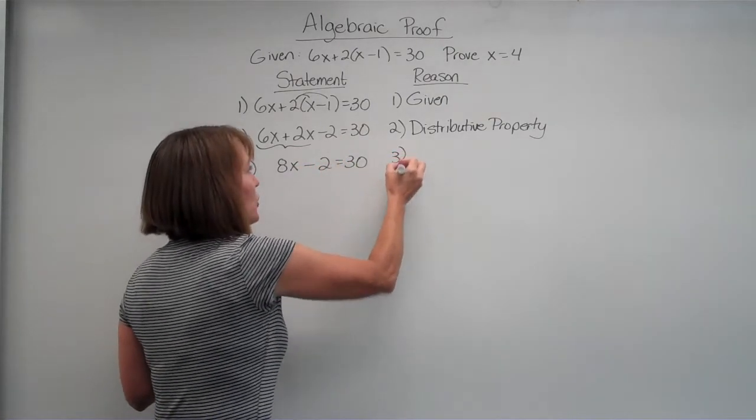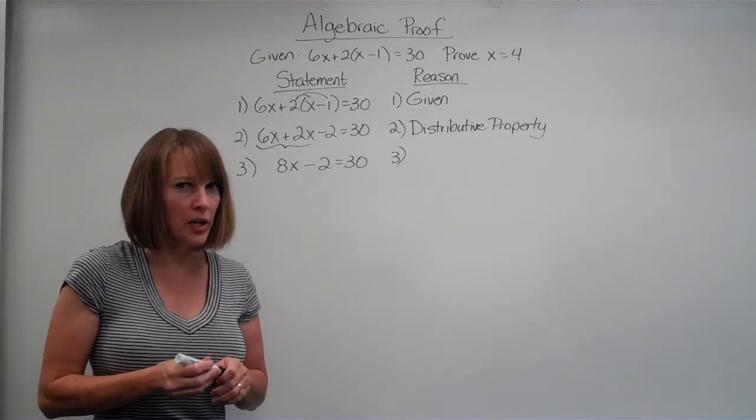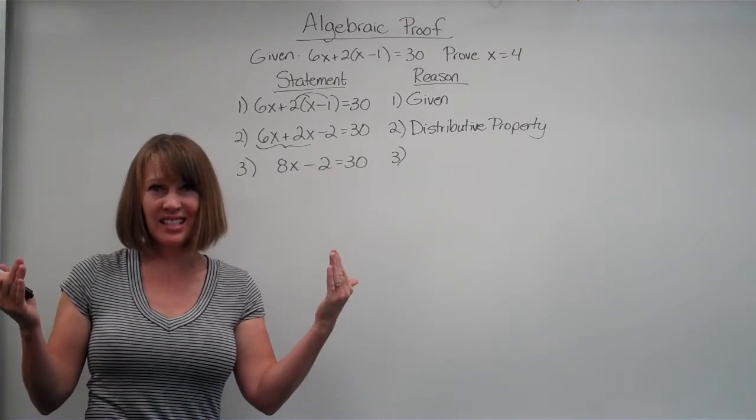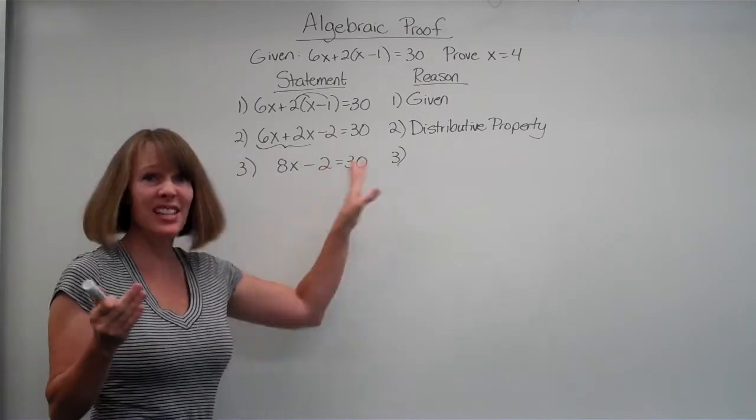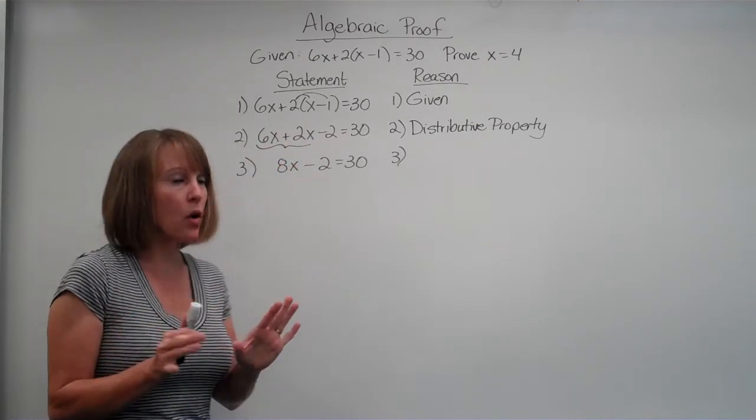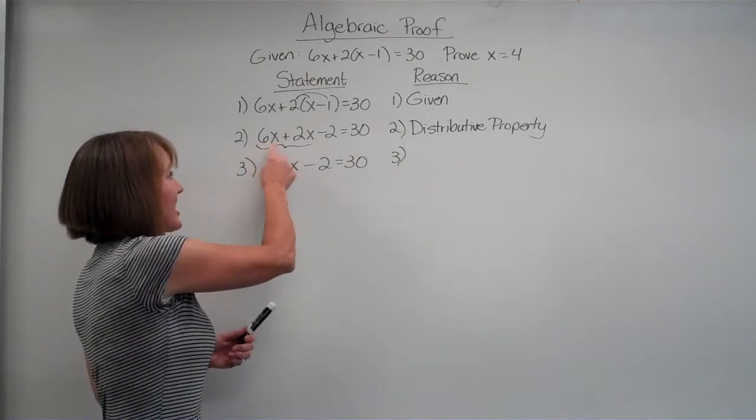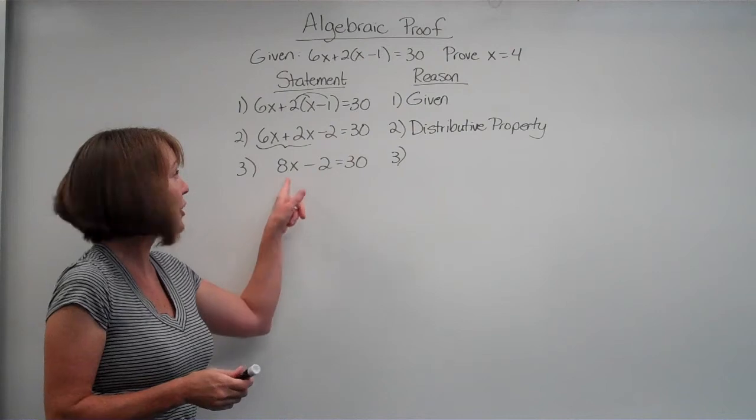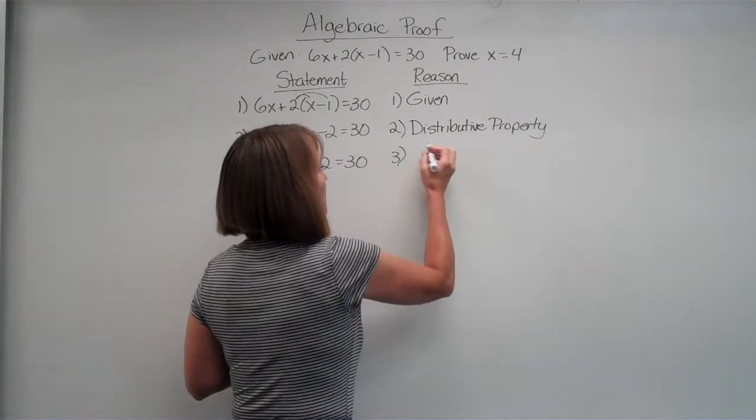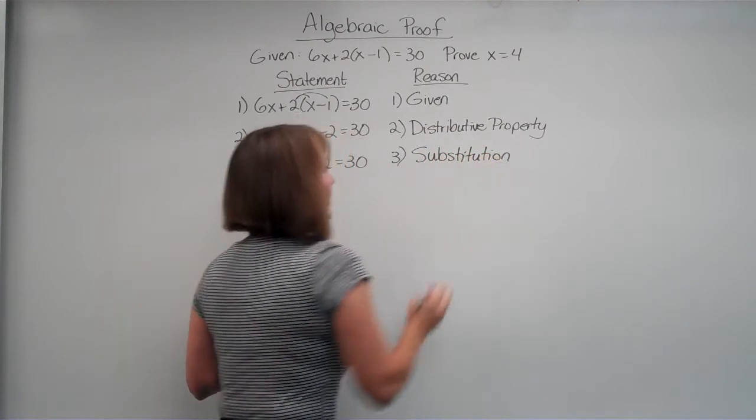Now, for some of you, the temptation is to say, well, I did the addition property. But that's not really what you did. Remember, the addition property is adding the same thing to both sides to balance the equation. And that's not what we did, right? We just combined these two together. So this is a little tricky one. What we did is we substituted. We said that 6x and 2x, if we combine them together, is the same thing as 8x. So what we did was substitution.